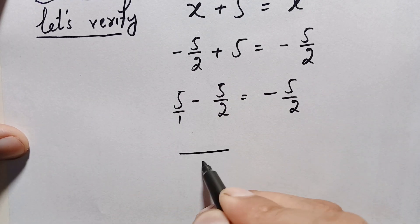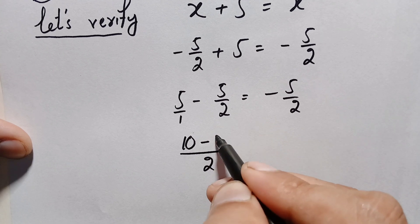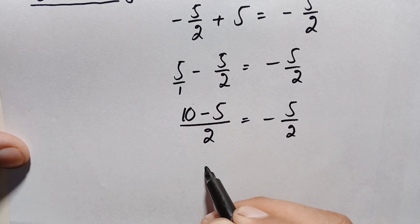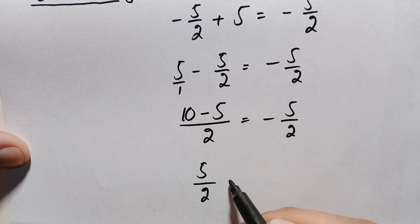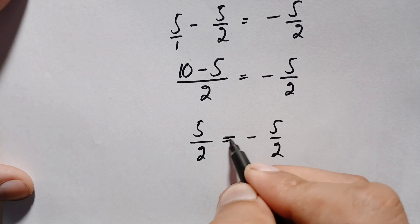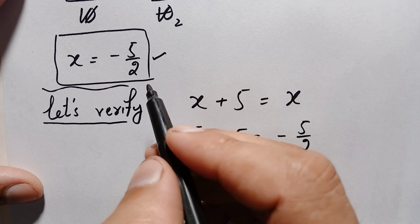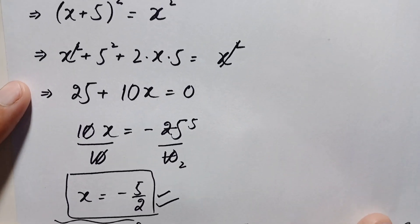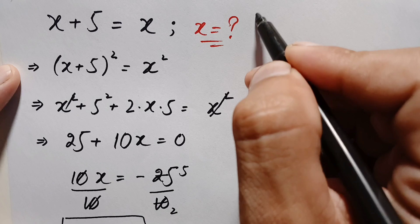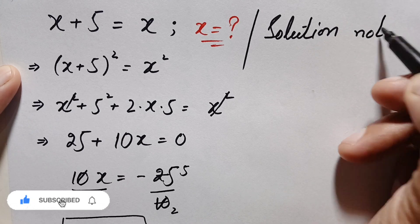Taking the common denominator on the left-hand side: 2 times 5 is 10, minus 5, giving 5 over 2. So the left-hand side gives positive 5 over 2, while the right-hand side is negative 5 over 2. The two sides are not equal because they have opposite signs. Therefore x equals negative 5 over 2 is not a valid solution, and we conclude that this problem has no solution — the solution does not exist.